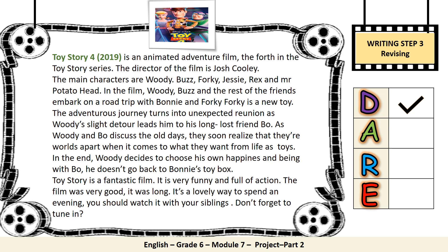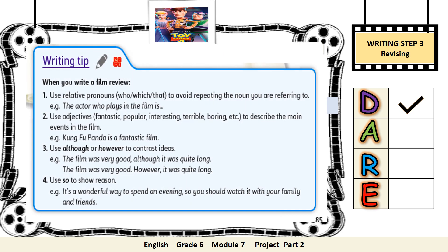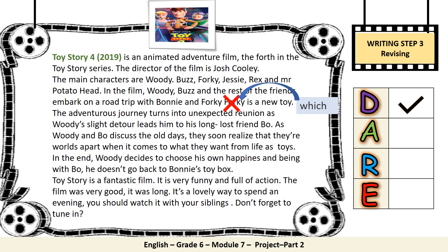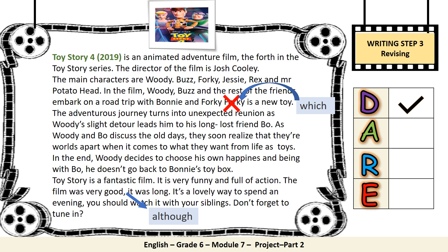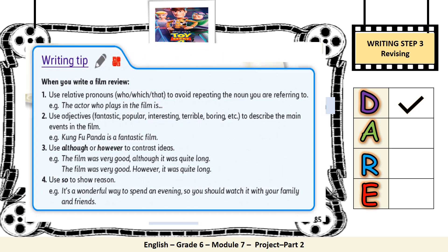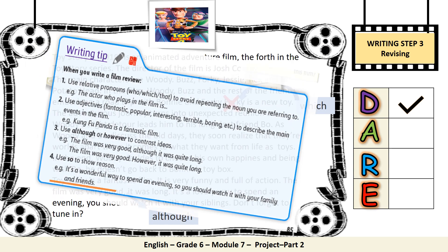Now let's go back to your article and add a relative pronoun. You can add which instead of the word Forky. Let's continue adding. This time we will be adding although or however to contrast ideas. Now read and add. Another word we can add is so — we use it to show reason. Now read and add it.